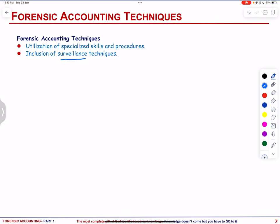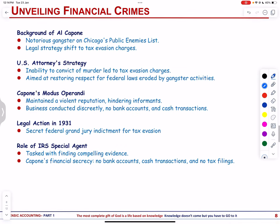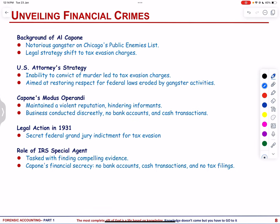Let us unveil financial crimes. We will talk about Al Capone's tax evasion trial. This case illustrates the pivotal role of forensic accounting in uncovering financial evidence crucial for prosecuting notorious figures engaged in illegal activities, ultimately leading to conviction on tax-related charges. In a notable application of forensic accounting, Frank Wilson from the IRS Special Intelligence Unit investigated Al Capone, Chicago's Public Enemy No. 1. In 1930, known for illegal activities like smuggling and bootlegging, Capone had evaded charges until Wilson's intervention.